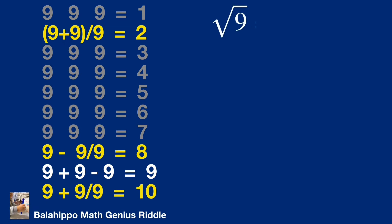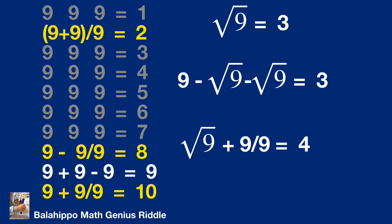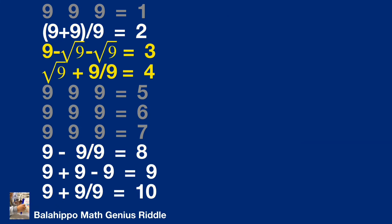Therefore, square root of 9 equals 3. Again, use it as one object. So 9 minus square root of 9 minus square root of 9 equals 3. Square root of 9 plus 9 over 9 equals 4. We have another two equations.